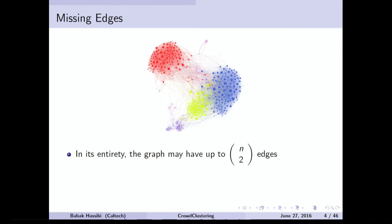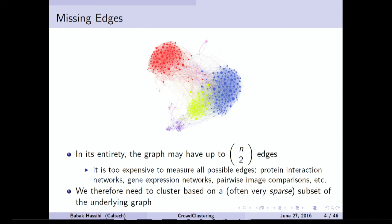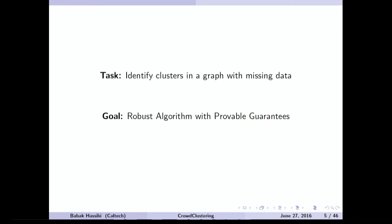In many applications it's often too expensive to measure all possible edges in the network. Sometimes you have to do experiments — for biological networks, looking at the interaction of two particular genes may require an experiment, and that's impossible to do for all combinations. In a social network, you may not know all the connections. So often we want to cluster based not on the entire graph, but on a very sparse subset. The task is to identify clusters in a graph with possible missing data and to develop algorithms with provable guarantees.